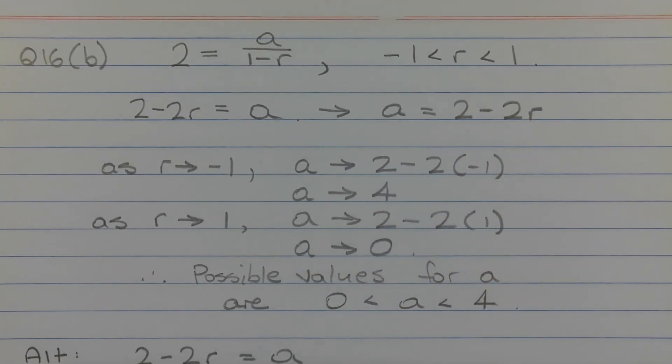Now consider what happens when R approaches negative 1 and when R approaches positive 1. So when R approaches negative 1, A approaches 2 minus 2 times negative 1. Now 2 minus 2 times negative 1 is 2 minus minus 2, which equals 4. So as R approaches negative 1, A approaches 4.